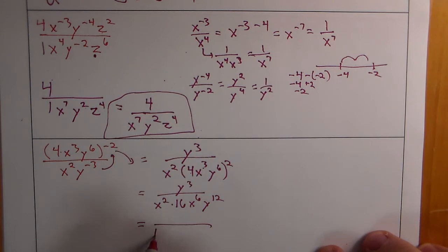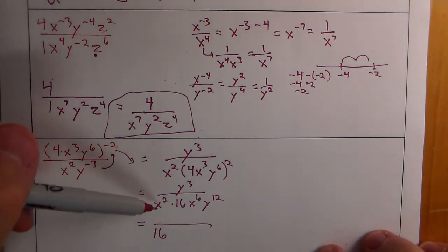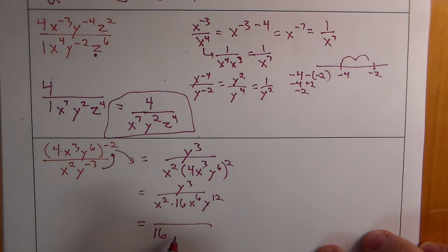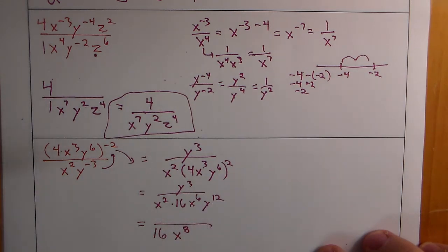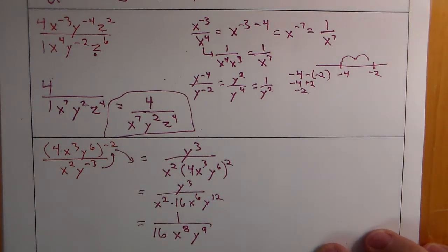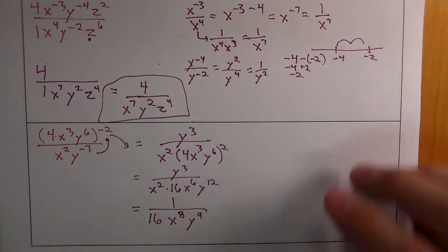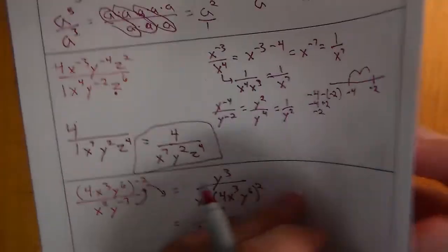The coefficient 16 goes out in front. X squared and x to the sixth gives x to the eighth in the denominator. For the y's, y to the third and y to the twelfth — there are 9 more on the bottom, so y to the ninth. The final answer is 1 over 16 x to the eighth y to the ninth.